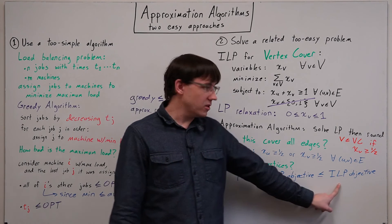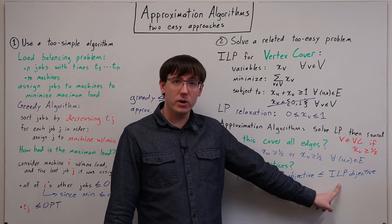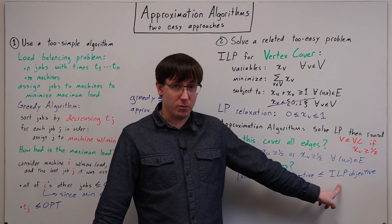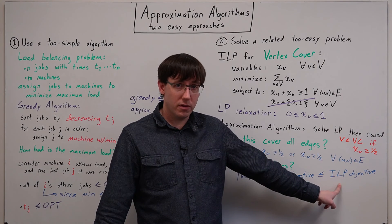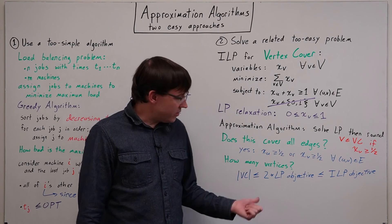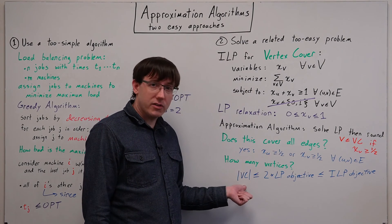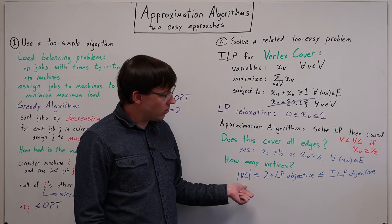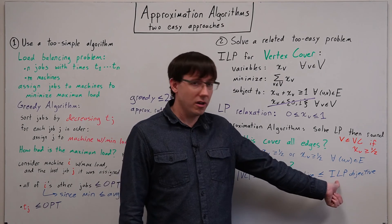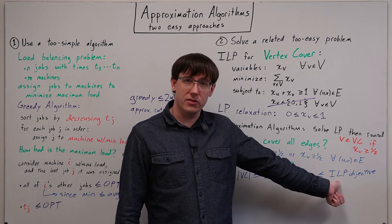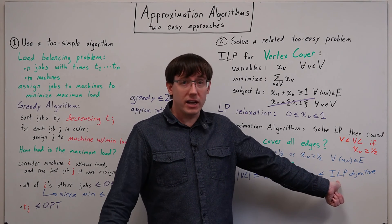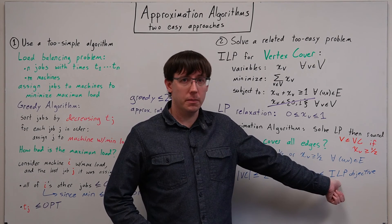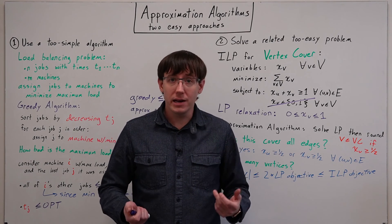And so if the size of our vertex cover is within a factor of 2 of the linear program's objective, which is less than or equal to the integer program's objective, then we know that the size of our vertex cover is, in the worst case, twice as large as the size of the optimal vertex cover. And so again, our approximation algorithm gives us a 2-approximation.